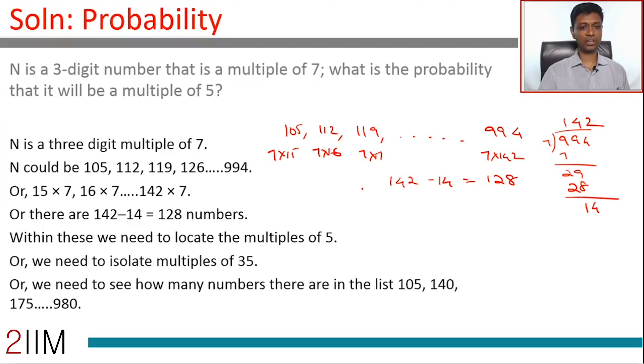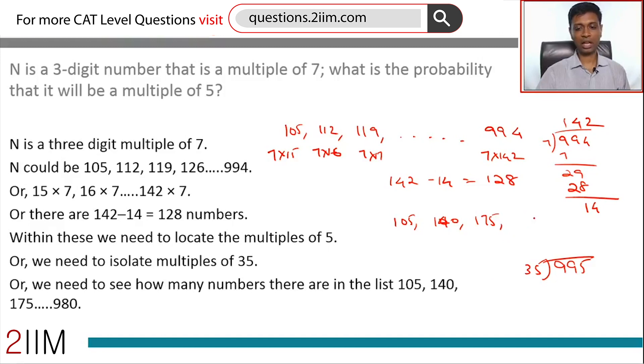Now, let us go to multiples of 35. Number of numbers on this list which also happen to be multiples of 5. 105 is a multiple of 35, 140 is a multiple of 35, 175, and so on. Largest multiple of 35: 995 divided by 35. 35 into 2 is 70. 995 by 70. 980 is a multiple of 70. The last number here, 980, would be a multiple of 35 as well. This is 35 into 3, 35 into 4, all the way till 35 into 28. So, 35 into 28.